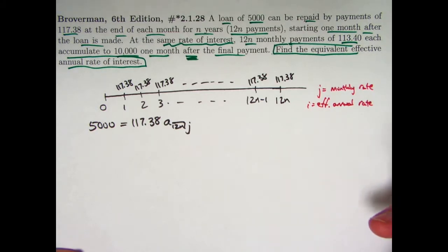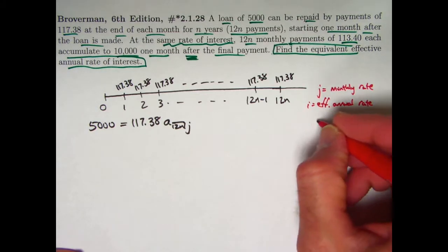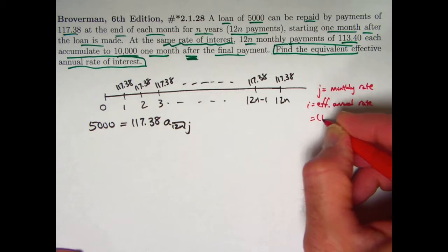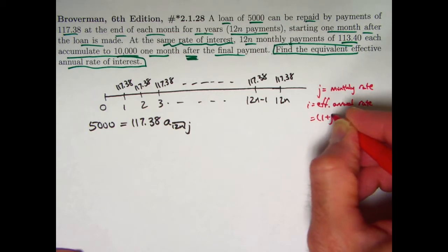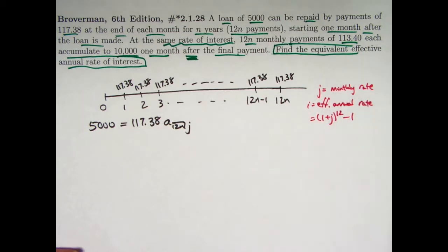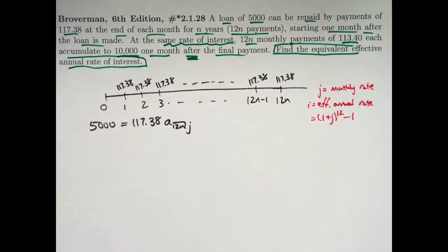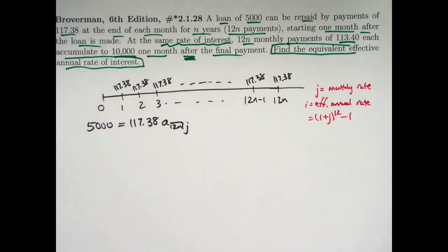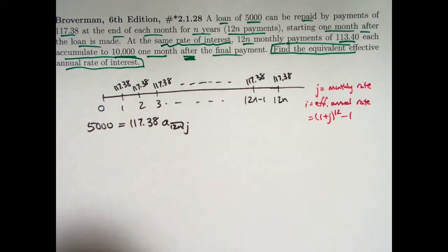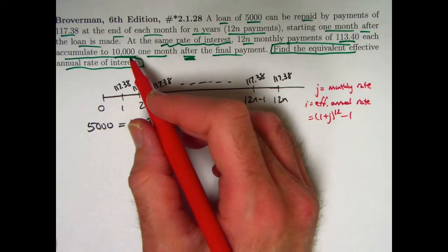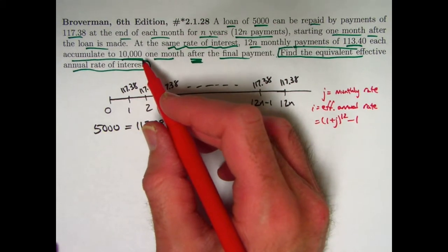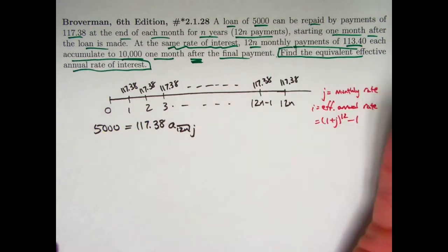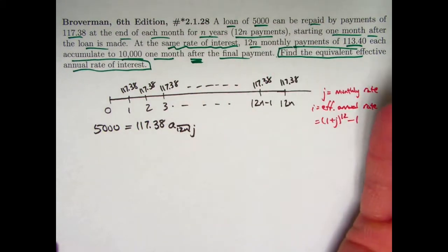The relationship between i and j is: 1 plus i equals 1 plus j to the 12th, so i equals 1 plus j to the 12th minus 1. If I can figure out j, or equivalently 1 plus j to the 12th, I can finish the problem. We also have payments of 113.40 accumulating to a future value of 10,000 one month after the final payment.